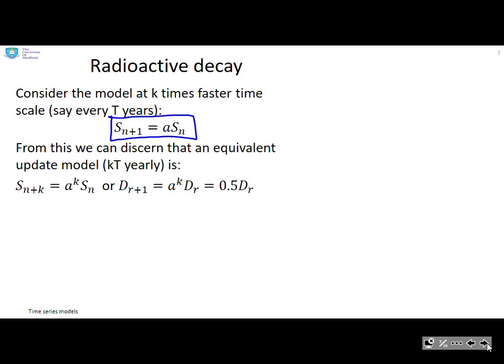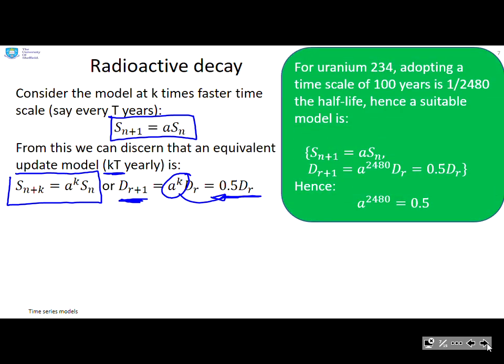And now let's see what happens after k times that, so kt yearly. So if I update that k times, I'm going to end up with this model here, S_{n+k} equals a^k times S_n. Now, what I'm going to assume is that kt is the half-life. And therefore, I know that if I use the half-life model, d_{r+1} equals 0.5 d_r, then a^k has got to be equal to 0.5. So this is what we've got here.